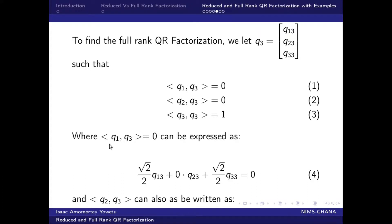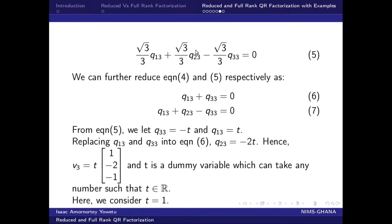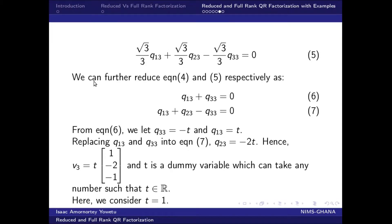We express the inner product of Q1 and Q3 equal to zero in equation form, and similarly the inner product of Q2 and Q3 gives us equation 5. We can further reduce equation 4 and equation 5 as equation 6 and equation 7 respectively, by dividing through by the coefficients.